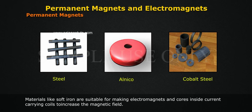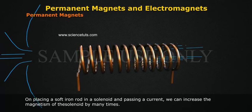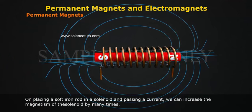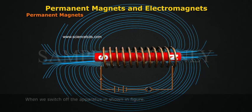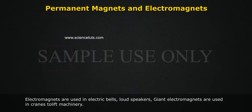Materials like soft iron are suitable for making electromagnets with current-carrying coils to increase the magnetic field. On placing a soft iron rod in a solenoid and passing a current, we can increase the magnetism of the solenoid by many times when we switch off the apparatus.